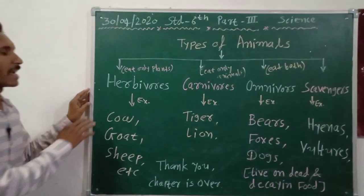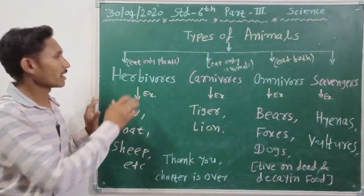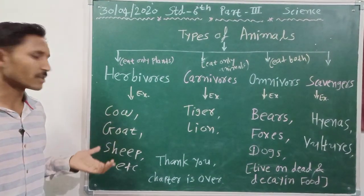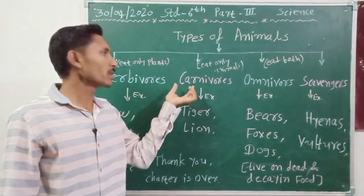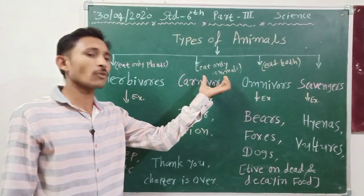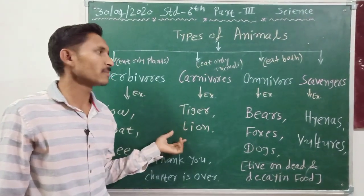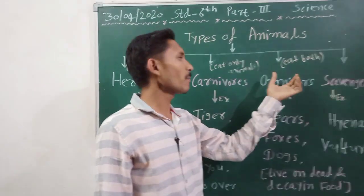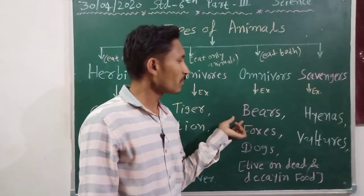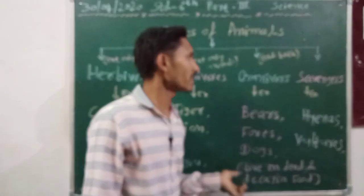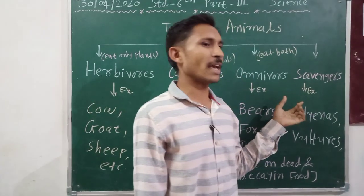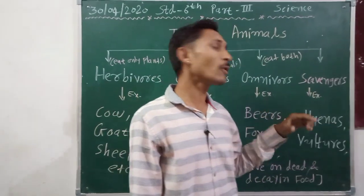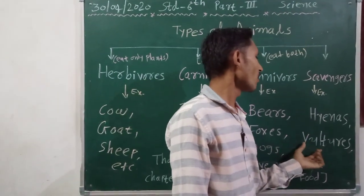Let me revise once more. Herbivores means animals which eat only plants — for example, cow, goat, sheep, etcetera. Carnivores eat only animals — for example, tiger, lion. Omnivores eat both plants and animals — for example, bears, fox, dogs, etcetera. Scavengers eat only dead animals — for example, hyenas and vultures.